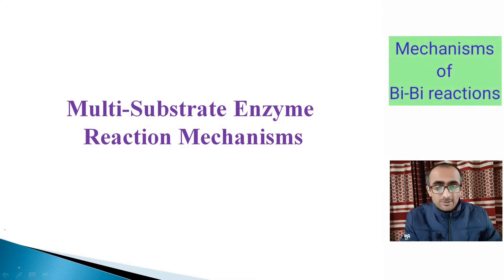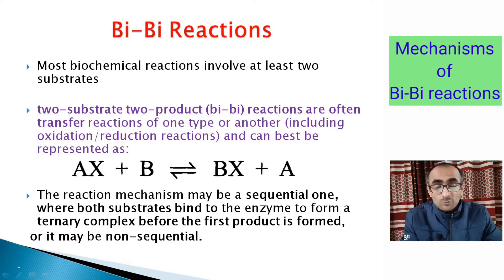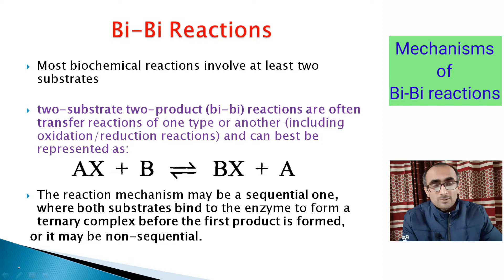In today's lecture we will talk about multi-substrate enzyme reactions. In most biochemical reactions they involve at least two substrates, and these reactions where two substrates are transformed into two products are also called bi-bi reactions. These bi-bi reactions are most often redox reactions or group transferring reactions.